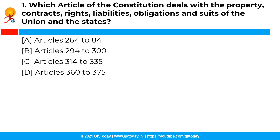The first question is: which article of the constitution deals with property, contracts, rights, liabilities, obligations and suits of the Union and the states?